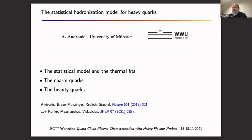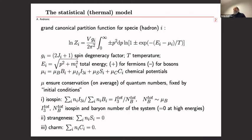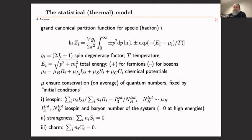You see here the co-authors and the papers on which this is based. I don't really need to introduce the statistical model or the thermal model here — the grand canonical partition function is the standard way to perform calculations, and then the canonical part is done via corrections, which are essentially ratios of Bessel functions.